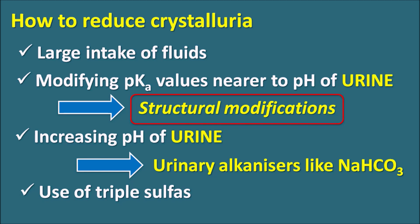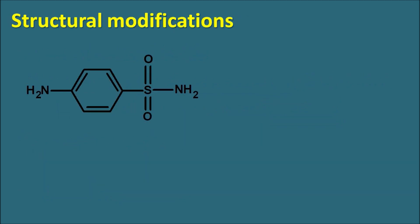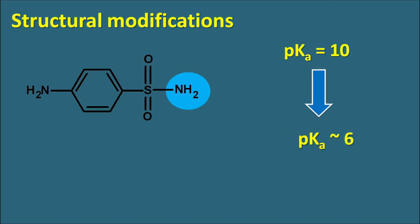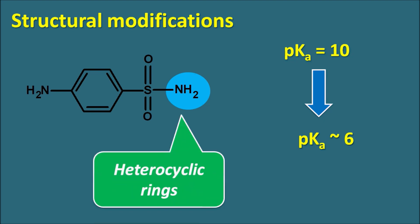For structural modifications: sulfonamide acts as a weak acid because the amide nitrogen has acidic protons that can be removed. By replacing one proton on the amide nitrogen with another group — specifically heterocyclic rings — the pKa can be modified. The goal is to bring the pKa from ~10 closer to 6, the urinary pH.